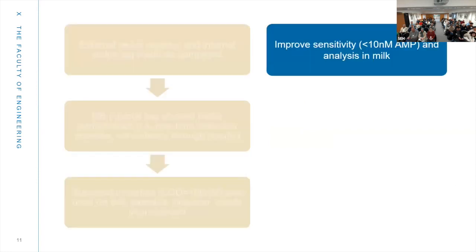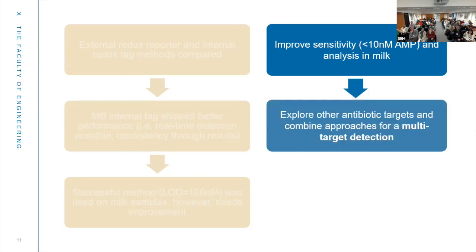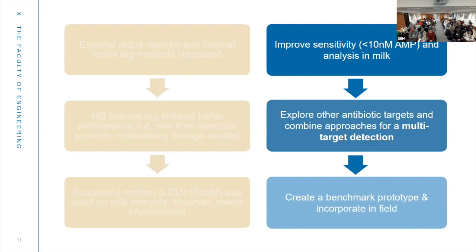The next steps are to improve sensitivity — the maximum residue limit for ampicillin in milk is roughly 11 nanomolar, but the current limit of detection is 100 nanomolar, so that's ten times off. Of course, I also need to improve the analysis in milk. And since we have eight working electrodes on the chip, I'd like to explore more targets — we can multiplex by putting different aptamers on different electrodes and detect eight targets simultaneously. Finally, the goal is to create a benchmark prototype and hopefully incorporate it in the field to help limit antimicrobial resistance spread, at least on dairy farms.